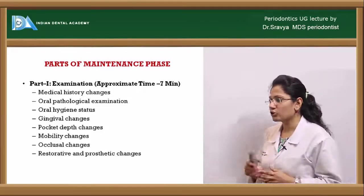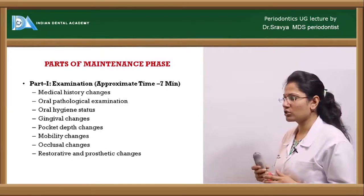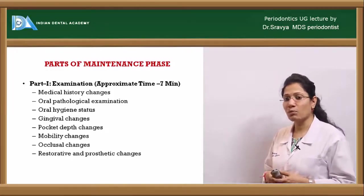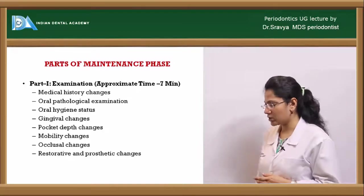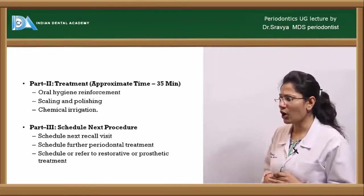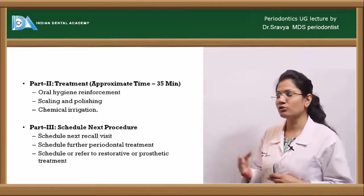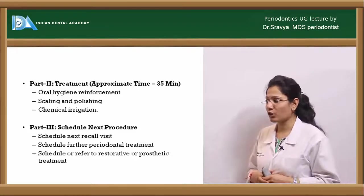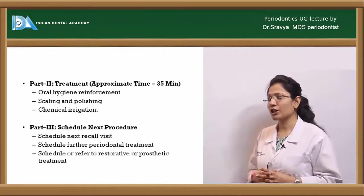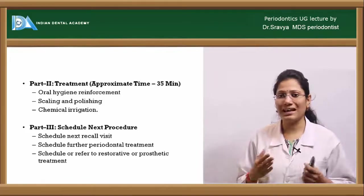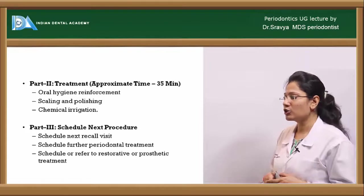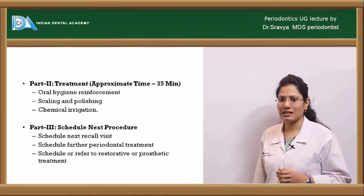During examination you also check for oral pathological findings, oral hygiene status, gingival changes, pocket depth changes, mobility changes, occlusal changes, and restorative and prosthetic changes. Part 2 — the treatment phase — allocates approximately 35 minutes for oral hygiene reinforcement, scaling and polishing, and chemical irrigation. Part 3 — scheduling — involves arranging the next recall visit, further periodontal treatment if needed, and referral for restorative or prosthetic treatment as required.